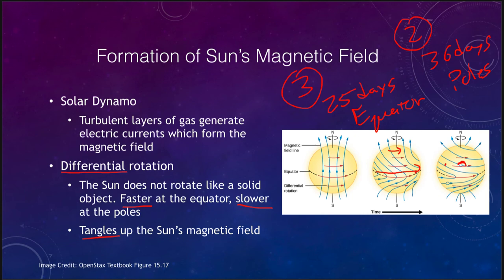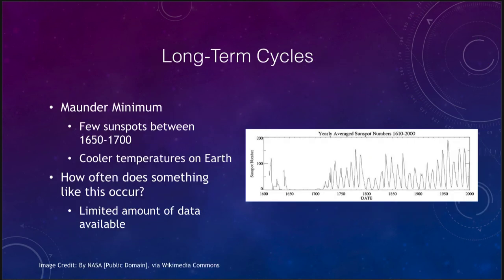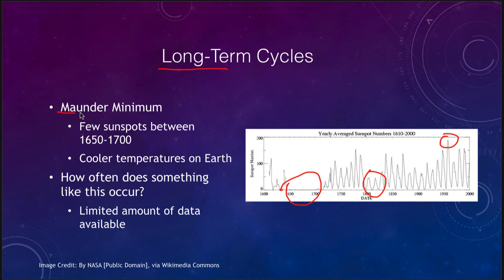When we look overall at sunspot activity, it also has very long-term changes. We do see the 11-year pattern, but we also note that some years had tremendous sunspot activity while others had a peak with very few sunspots. There is one section, between about 1650 and 1700, which we call the Maunder minimum. Typically, the minimum is what occurs right between sunspot cycles when there are very few sunspots, but during this period there were essentially no sunspots on the sun for many decades.